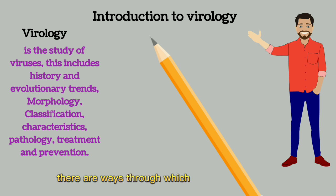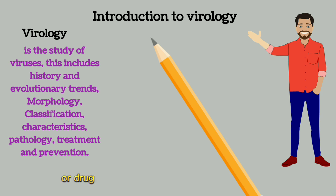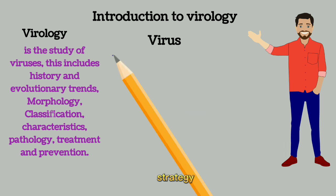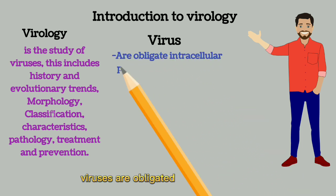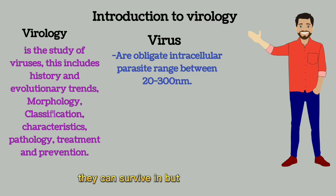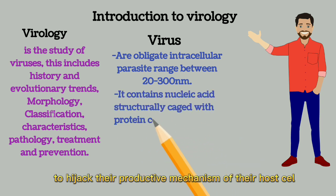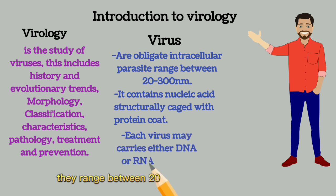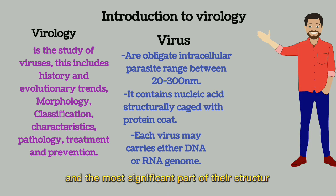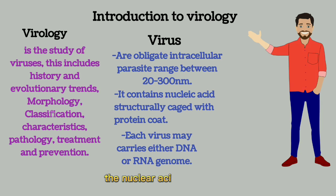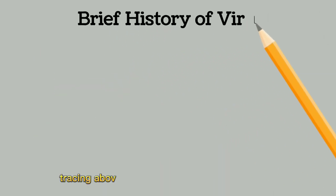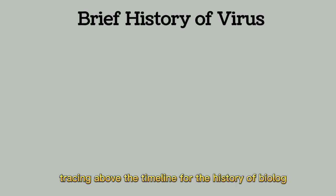There are ways through which we can diagnose viruses in the lab or in the hospital, the kinds of antiviral and retroviral drugs needed for treatment, and prevention strategies. Viruses are obligate intracellular parasites — they can survive in both innate and active ways and have the genetic makeup to hijack the reproductive mechanism of their host cell. Most of them range between 20 nanometers to 300 nanometers, and the most significant part of their structure is the nucleic acid covered by a capsid.